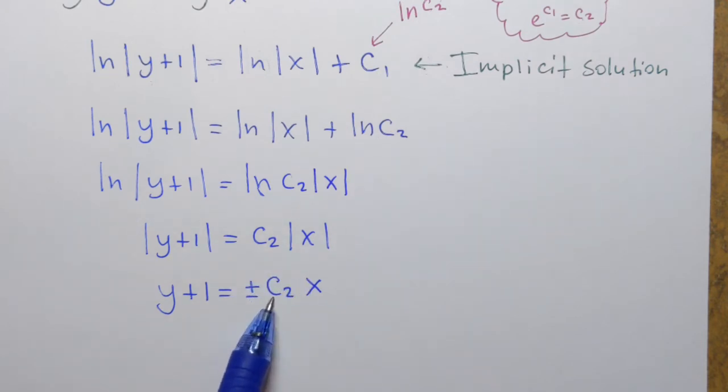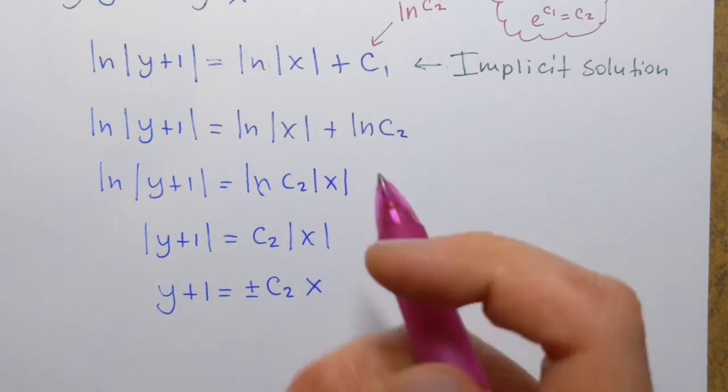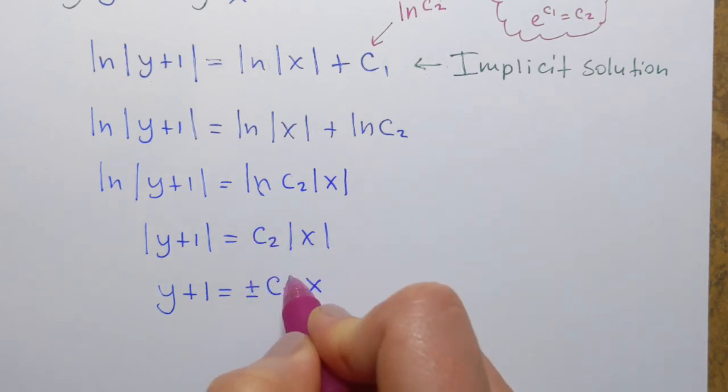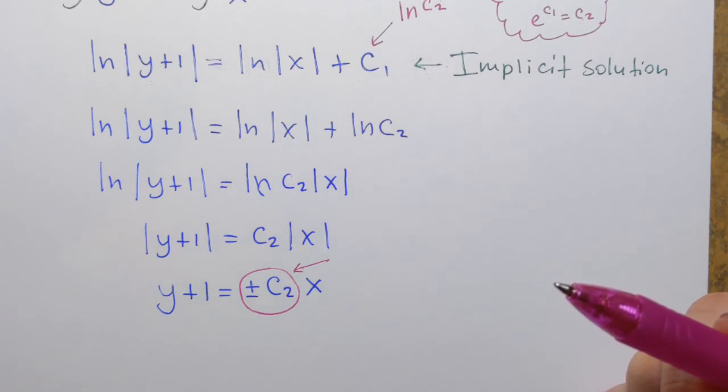And finally, what I'll do. So I'll think about this ±C2 as another arbitrary constant. So I'll just relabel it. So I'll call that, I could call it C3.